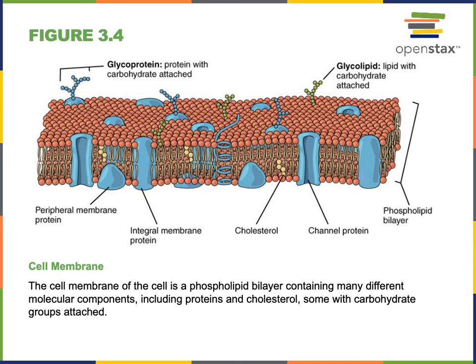The plasma membrane contains many embedded proteins — integral membrane proteins — and many of these function as channel proteins that can enable diffusion through a mechanism we call facilitated diffusion.